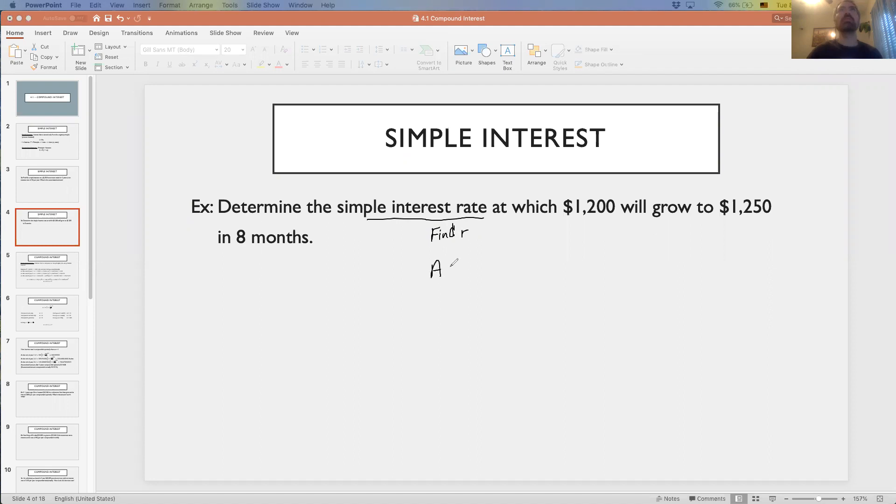We can still use our accumulated amount formula. Let's determine our variables, and then we'll plug in. We're trying to determine the simple interest rate at which $1,200 will grow to $1,250. The accumulated amount is $1,250, that's how much it grows to. The principle is how much we started with, that's the $1,200. The time is eight months. Remember, we have to convert that to years. To convert months to years, we're going to divide by the number of months there are in a year, which is 12, so eight divided by 12.